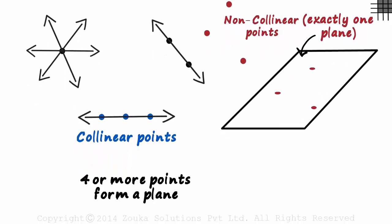Will four or more non-collinear points always form a plane? Not necessarily. But if they do, they are called coplanar points.